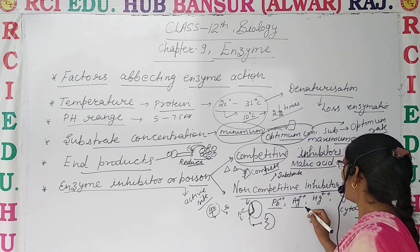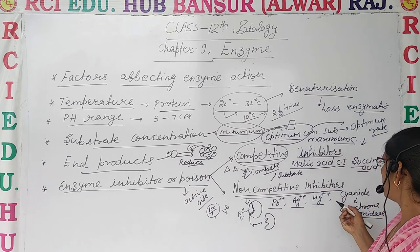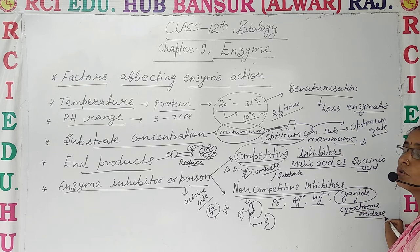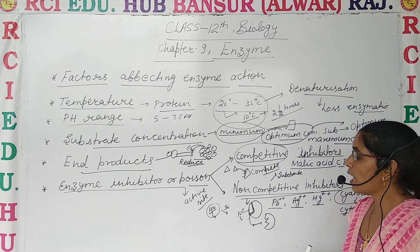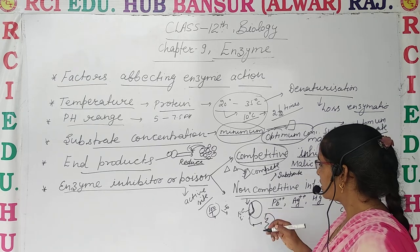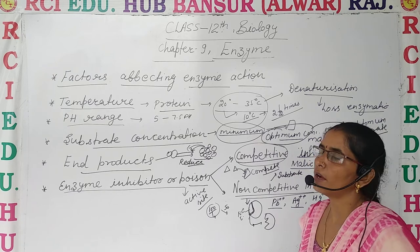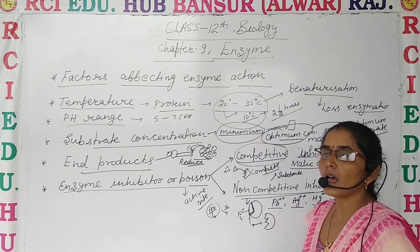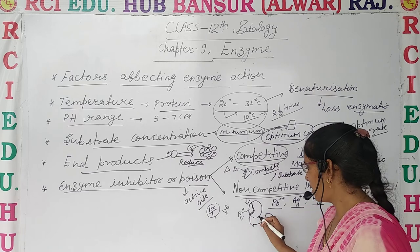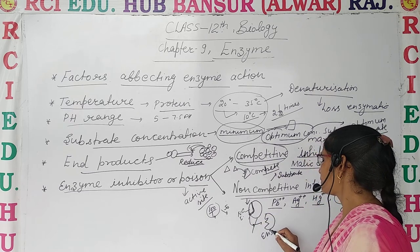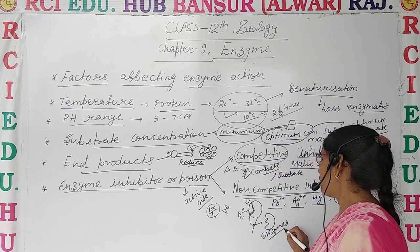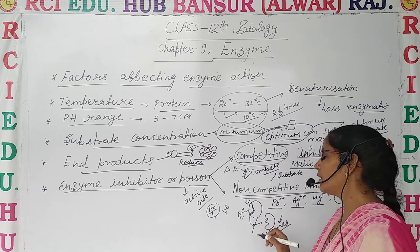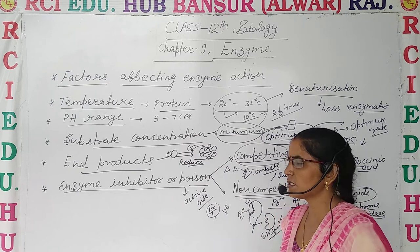Examples of non-competitive inhibitors include Pb, Hg, and cyanide. Cyanide is a non-competitive inhibitor of cytochrome oxidase. To reverse or stop non-competitive inhibition, we increase the amount of enzymes, so that more enzymes are available to bind with the main substrate and product formation can occur.